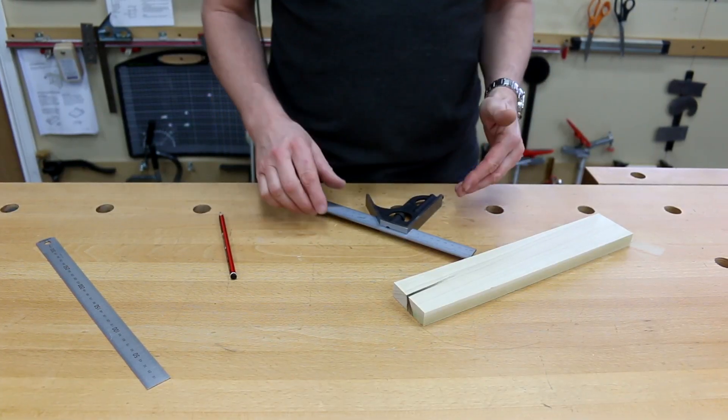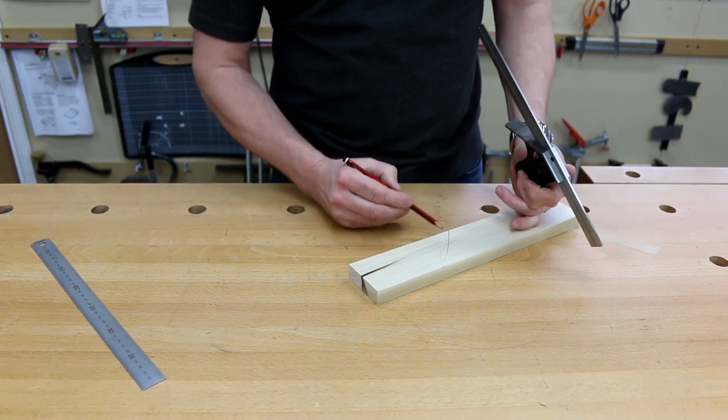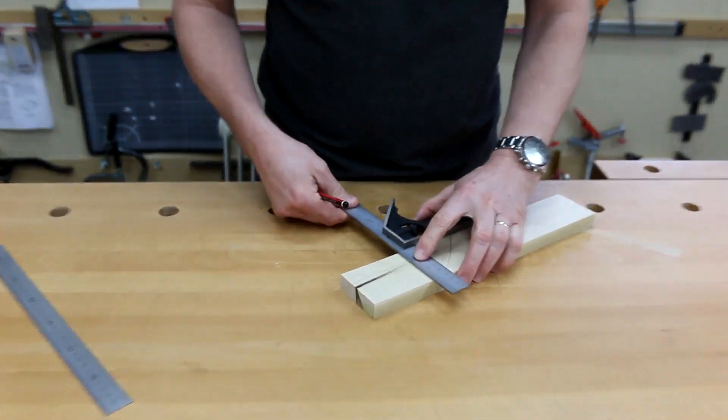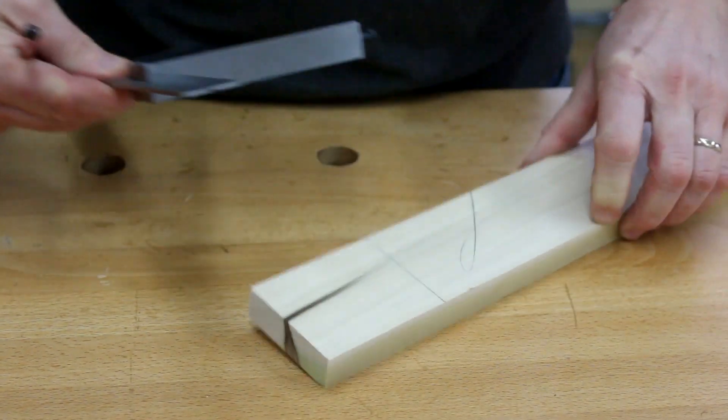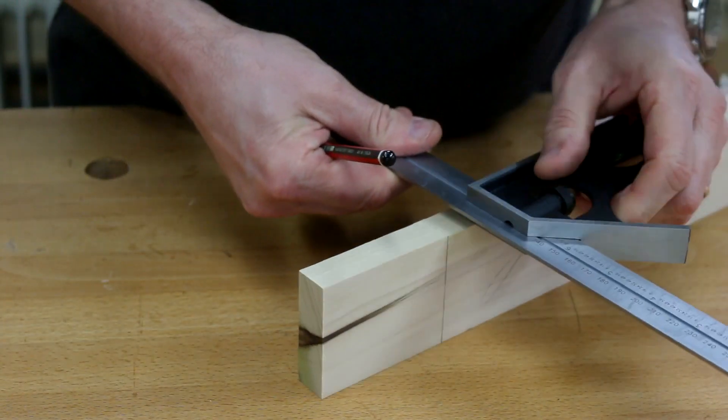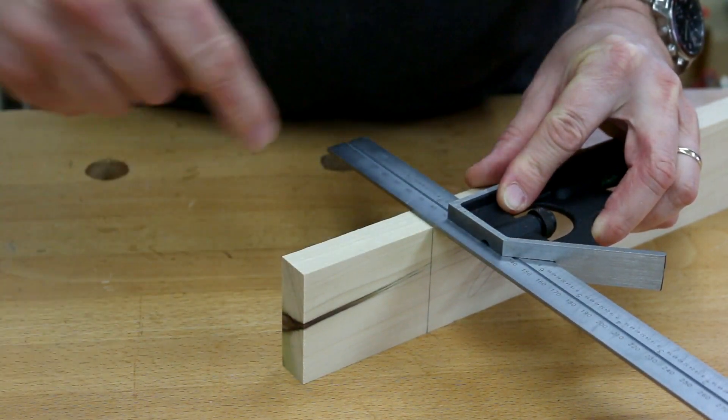One of the standard things you're going to use your combination square for is marking up your face side, face edge and squaring around your timber. Good crisp line on here. And you could mark your lines all the way around to get you a continuous box.